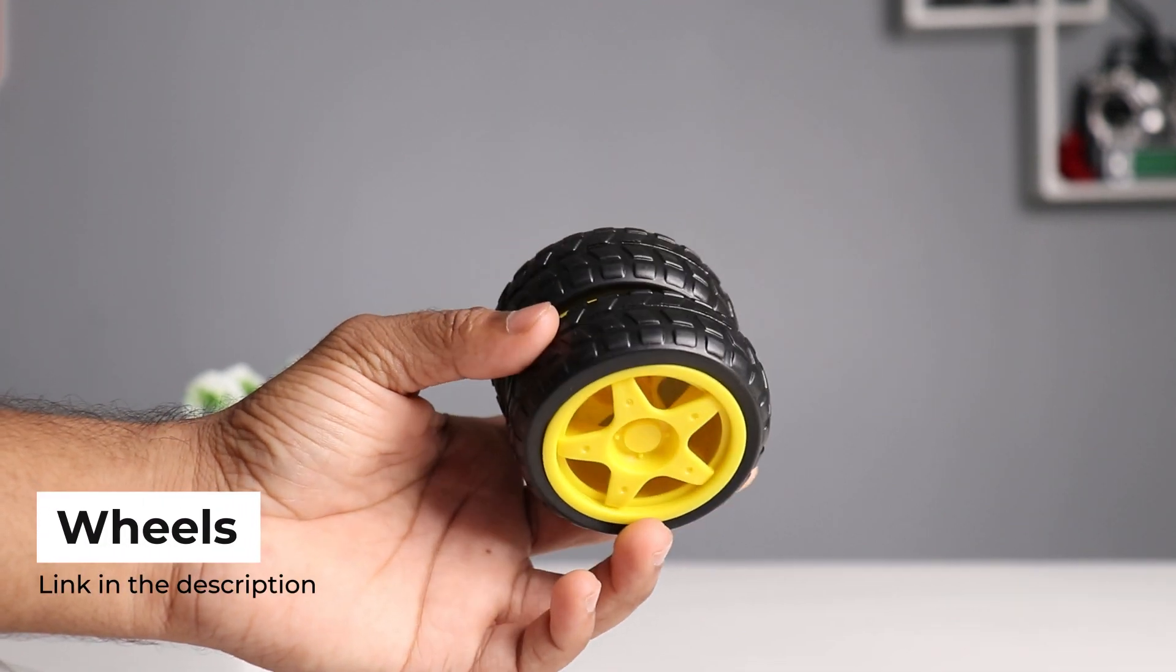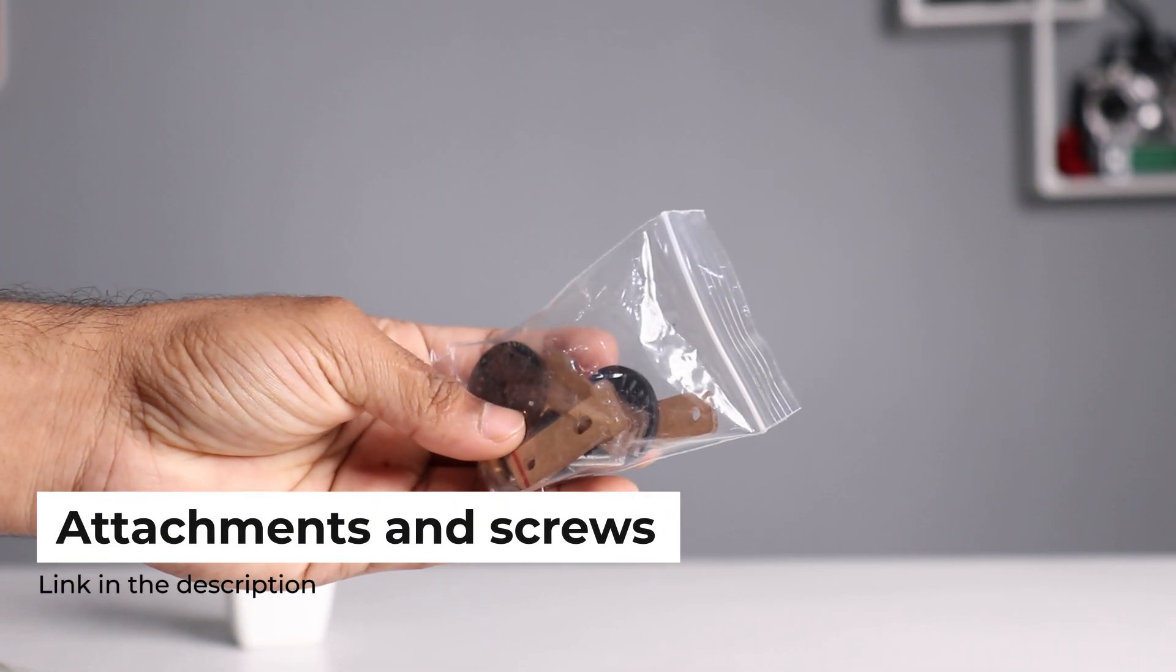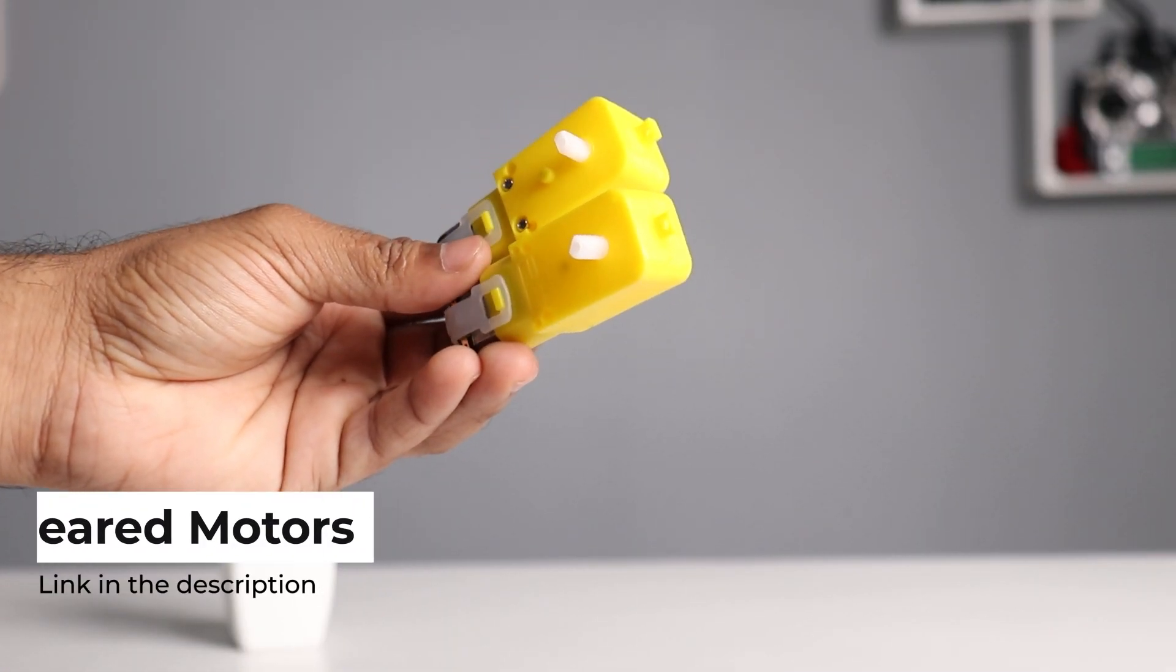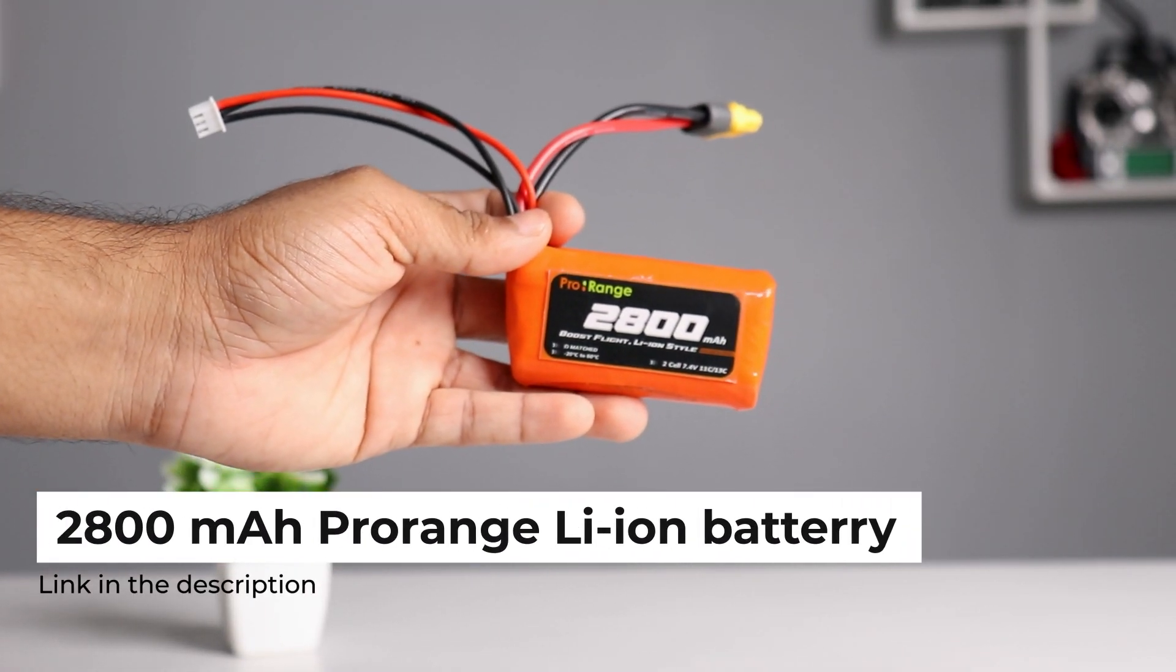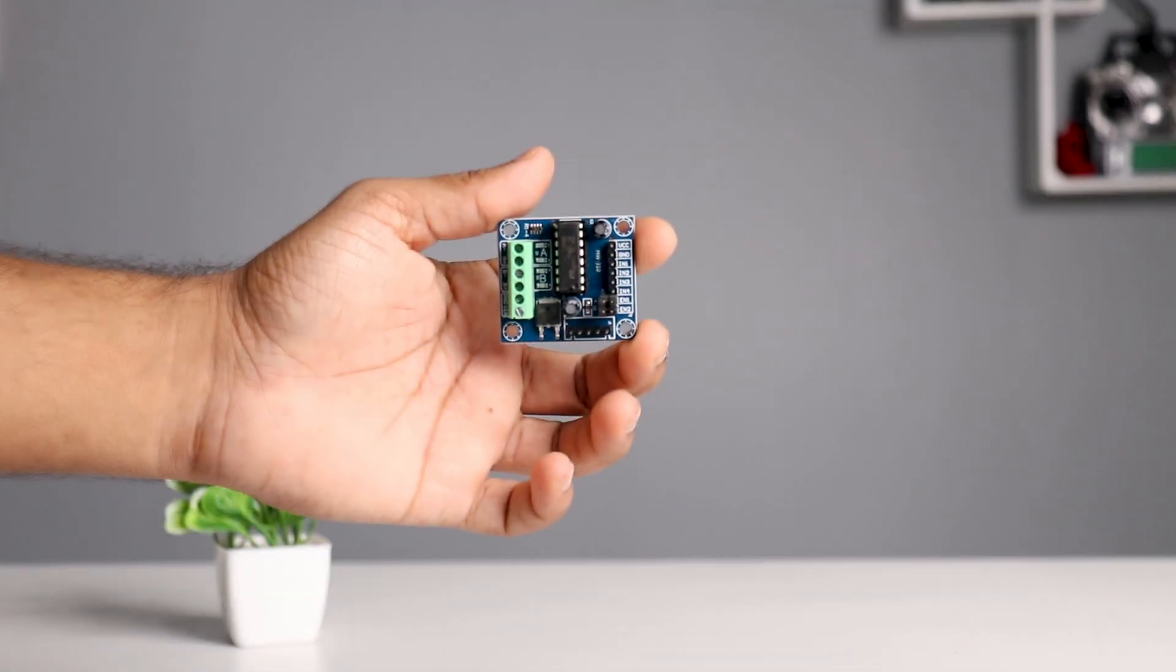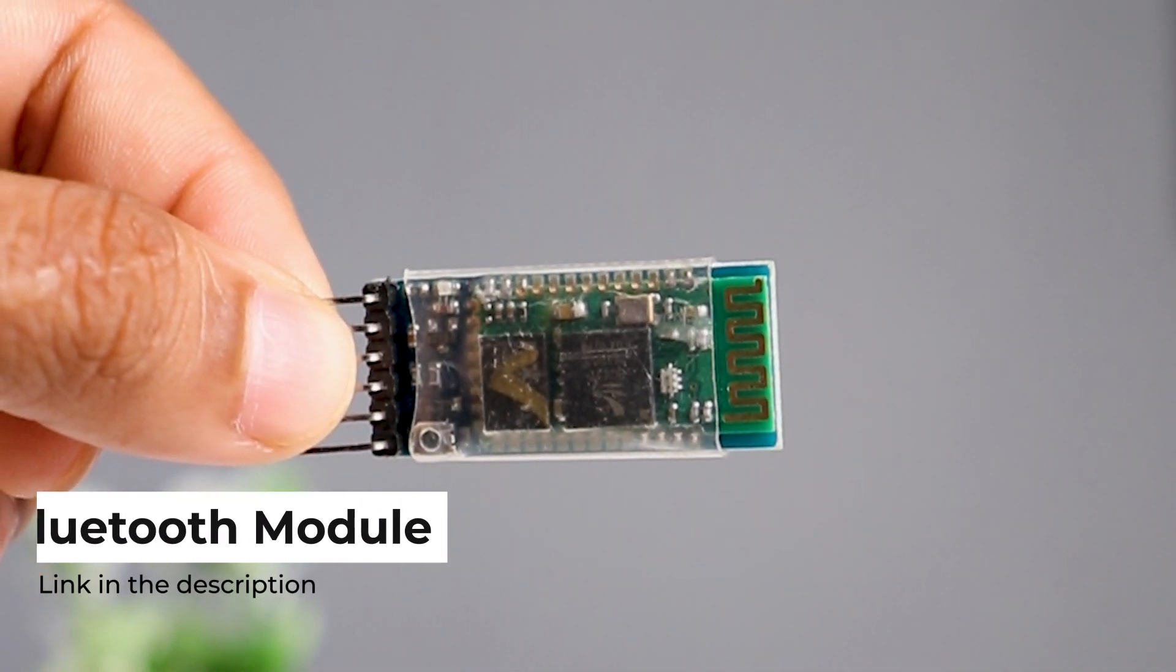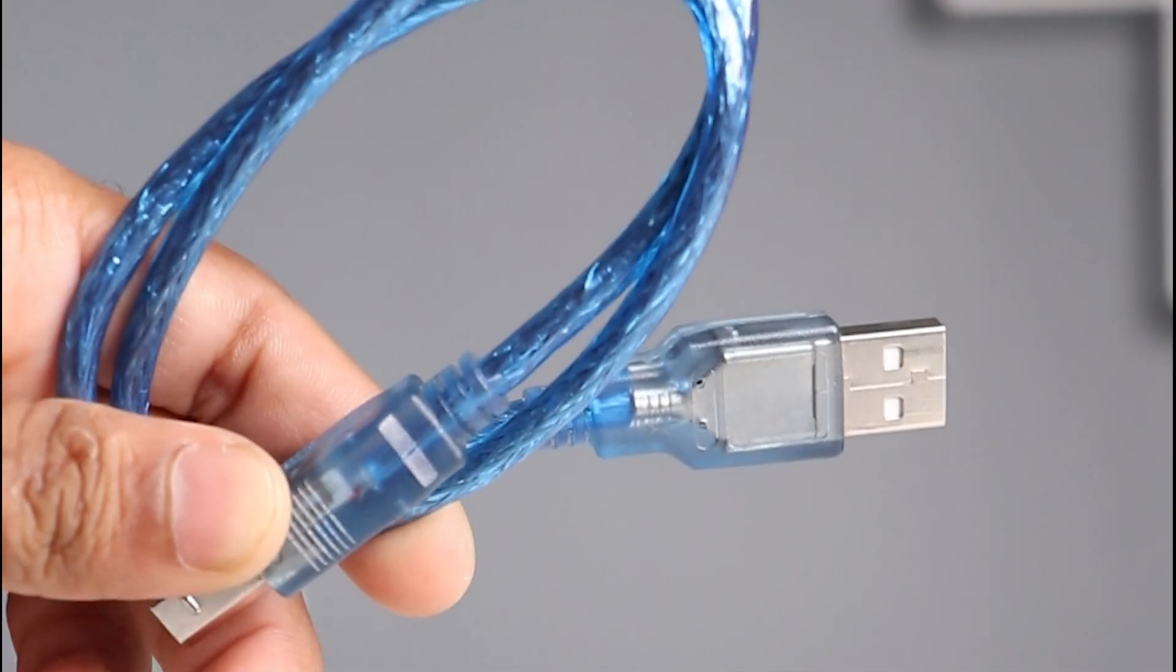Here you can see we are going to use these wheels. We will need all these screws and extensions, car chassis, motors, front wheels, some wires, 2800 mAh pro range lithium-ion battery, motor driver, HC05 Bluetooth module, Arduino Uno, jumper wires, and Arduino cable.